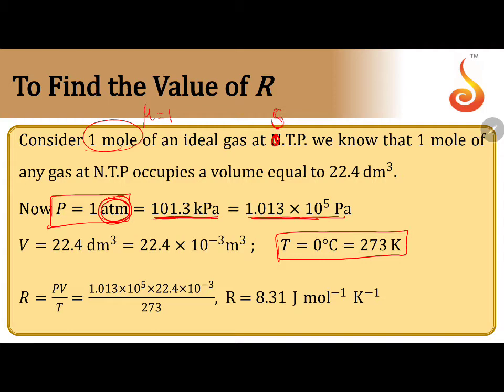Temperature is zero degrees Celsius which is not in SI unit. It is 273 Kelvin. Similarly, they have given 22.4 dm cubed, or liter, which can be written as 22.4 times 10 to the power minus 3 meter cubed.